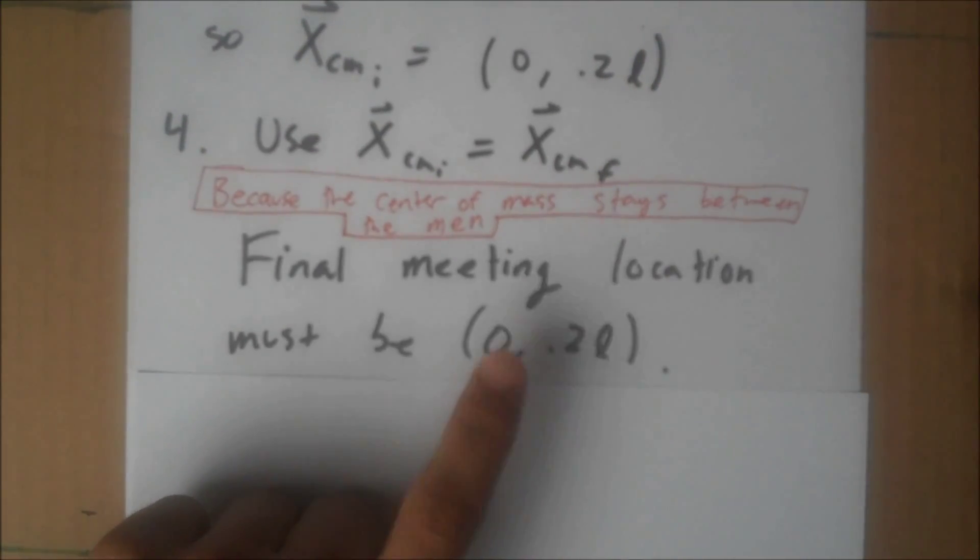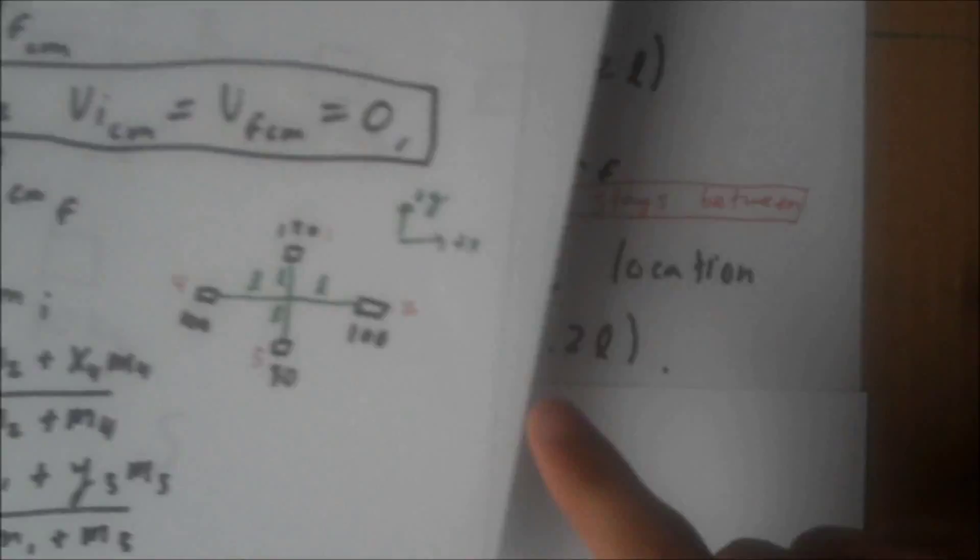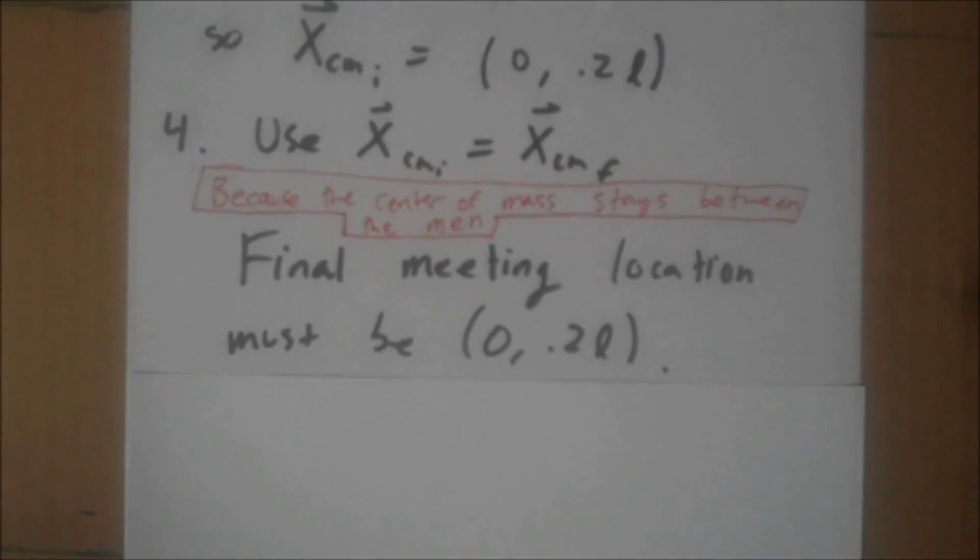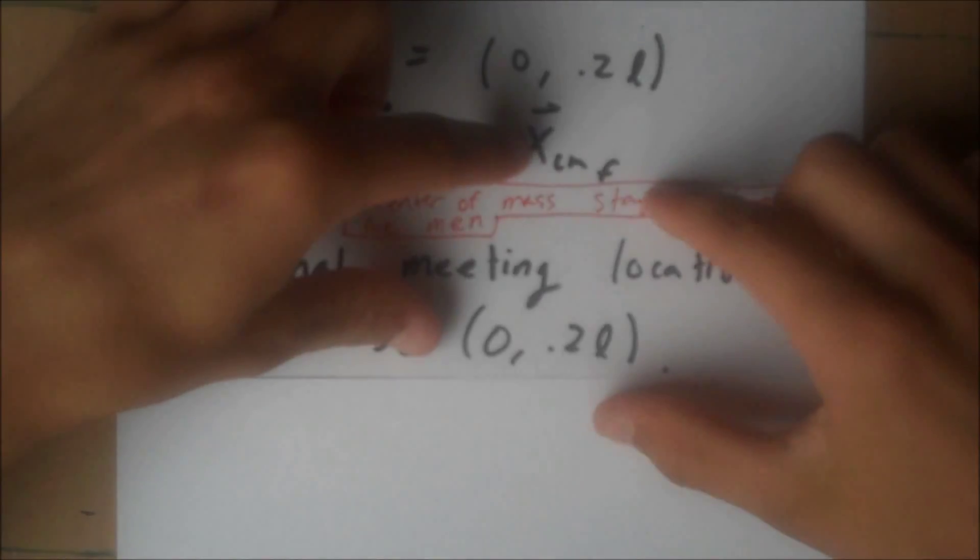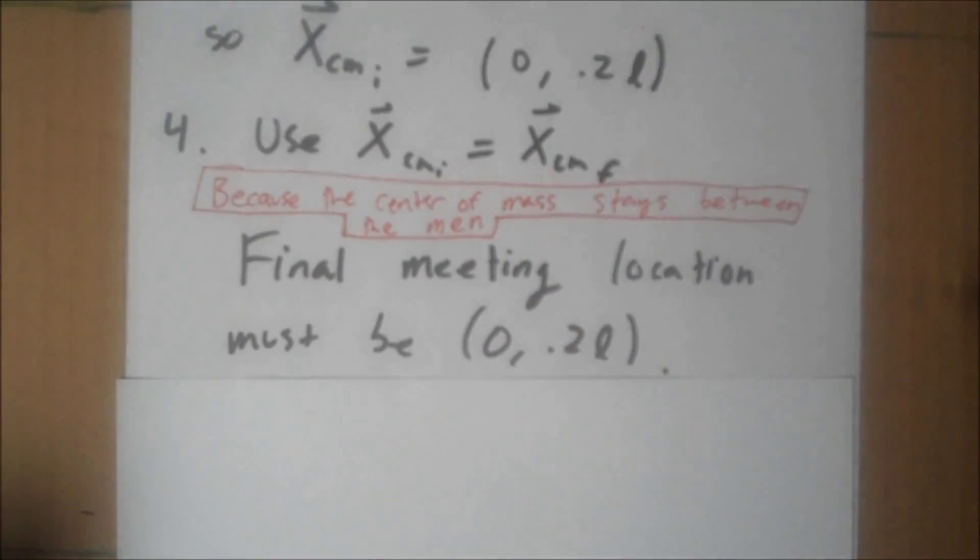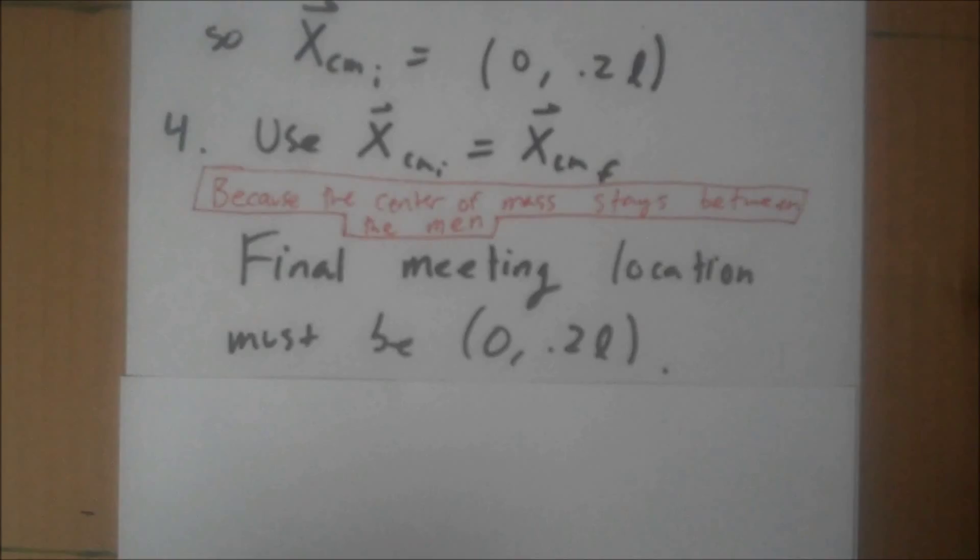Their final meeting location has to be the location of the original center of mass. To overview, the men start out with their weight distributed in this kind of compass rose, and their center of mass is some place. What we want to know is, where do they end up once they all meet? Well, when they meet, they're all squeezing the center of mass between them, and they'll all converge on the center of mass. And it cannot move from the beginning because there are no forces. So it has to be the location of the original initial center of mass, which is 0, 0.2L. So that is our final answer.